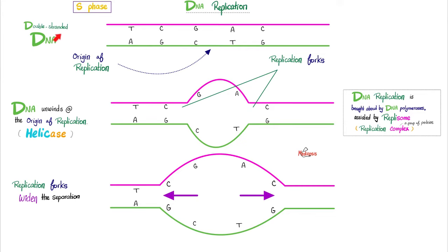These two strands are called parent strands because they are the original strands. We use each of them to lay down new daughter strands. DNA polymerases synthesize the two new daughter strands. They are helped by the replisome — a complex of proteins that assist with replication.